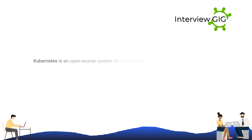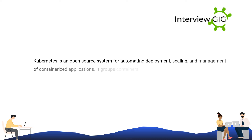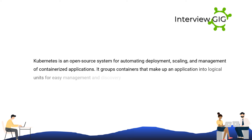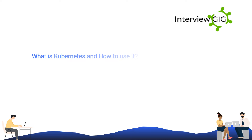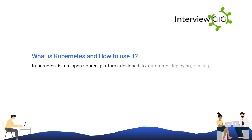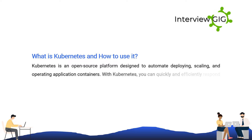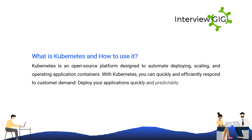Kubernetes is an open-source system for automating deployment, scaling, and management of containerized applications. It groups containers that make up an application into logical units for easy management and discovery. Kubernetes is an open-source platform designed to automate deploying, scaling, and operating application containers. With Kubernetes, you can quickly and efficiently respond to customer demand and deploy your applications quickly and predictably.